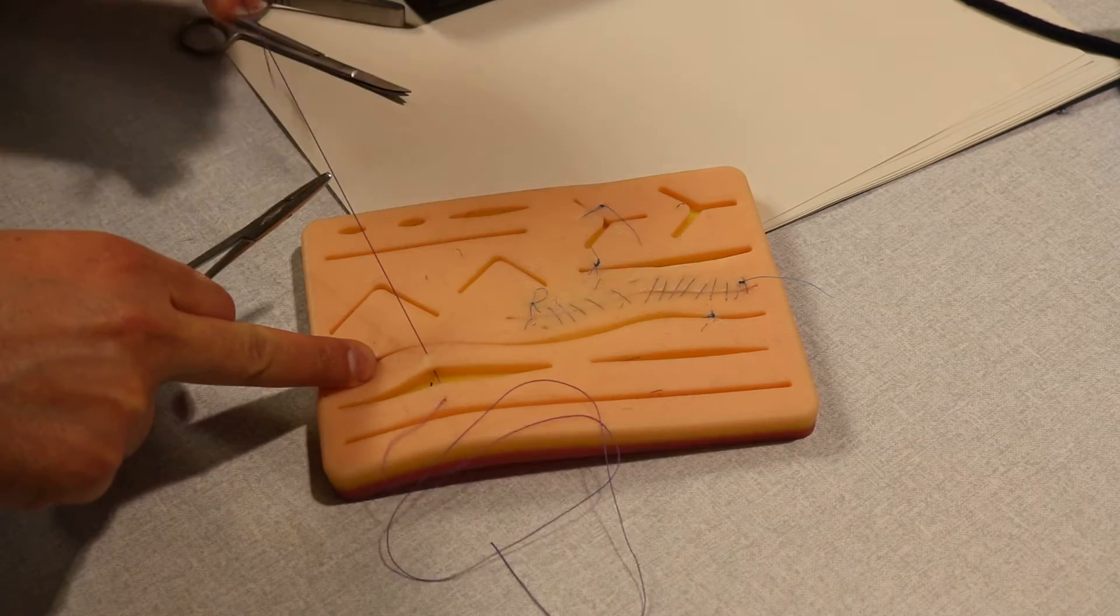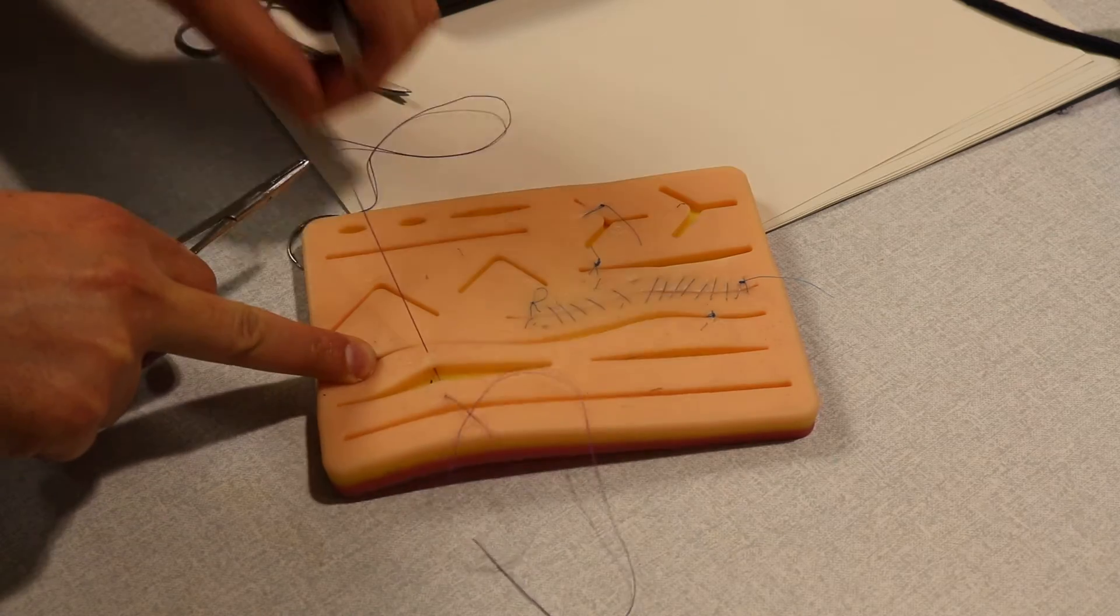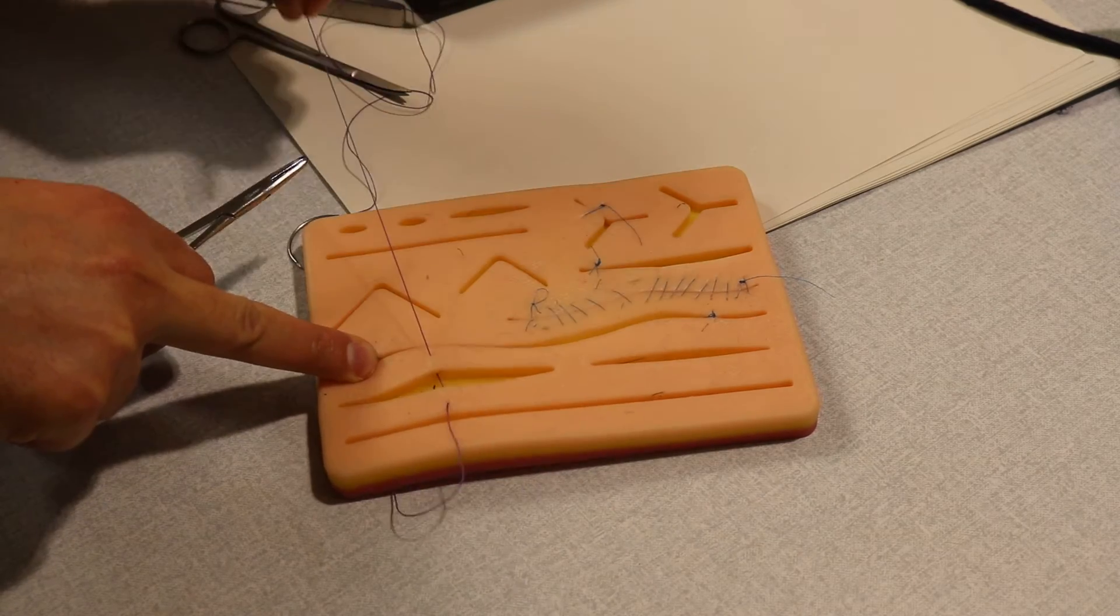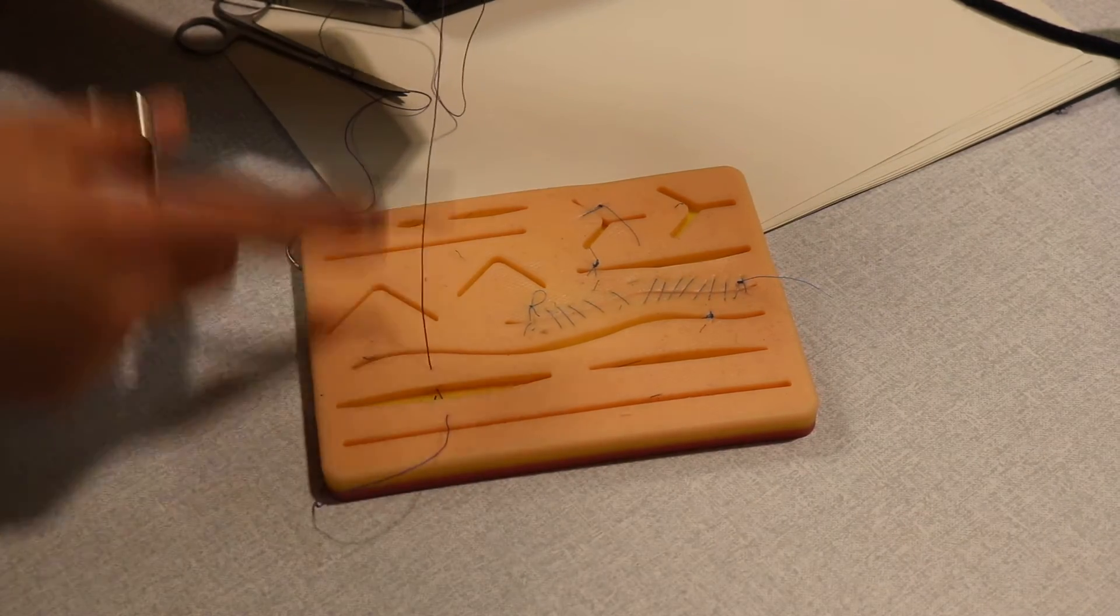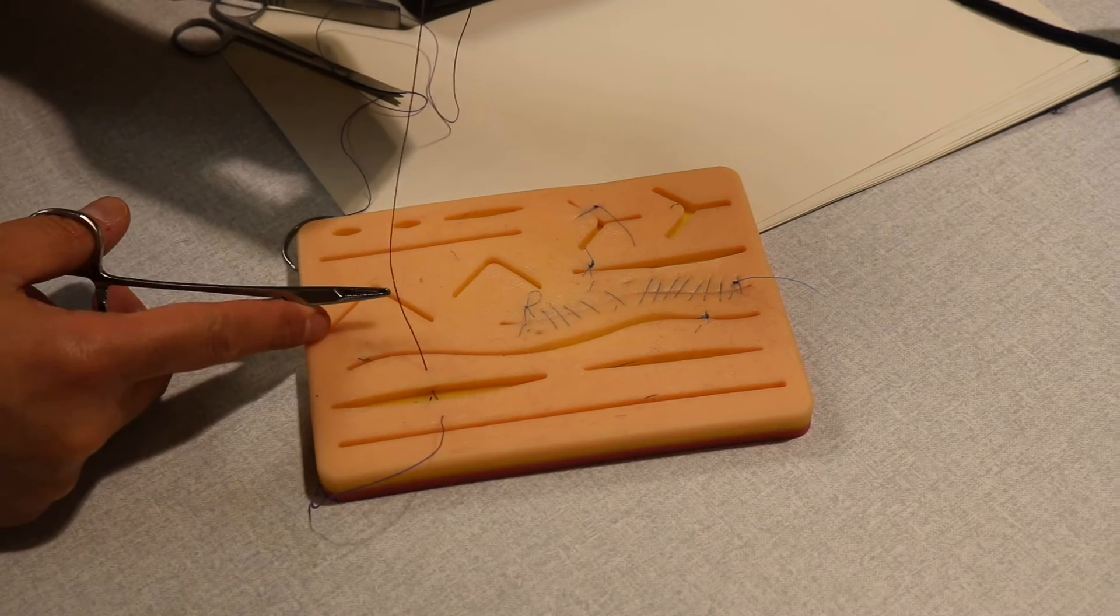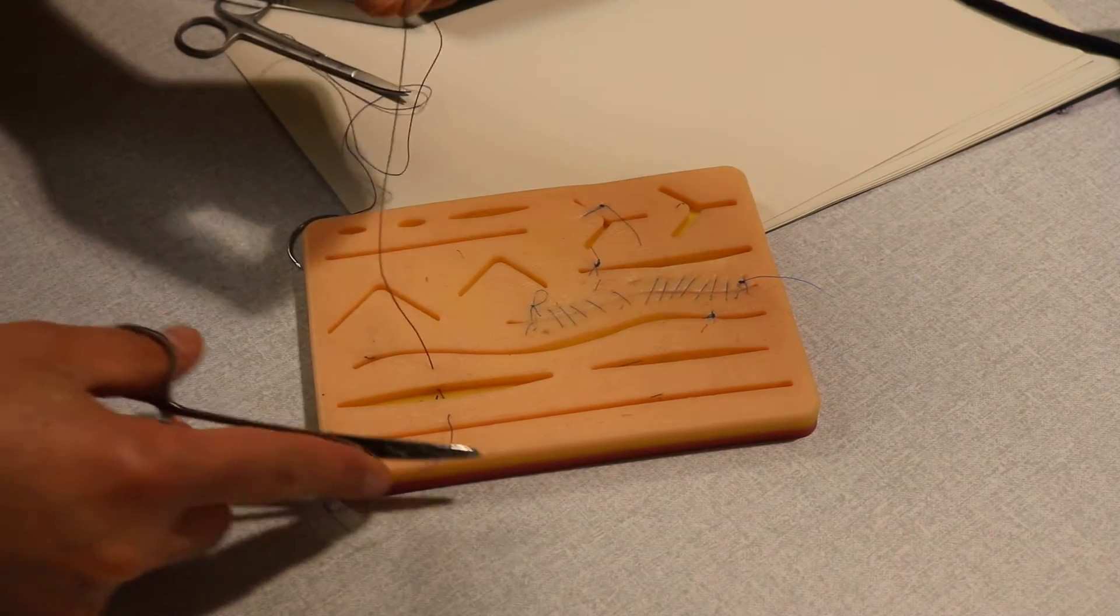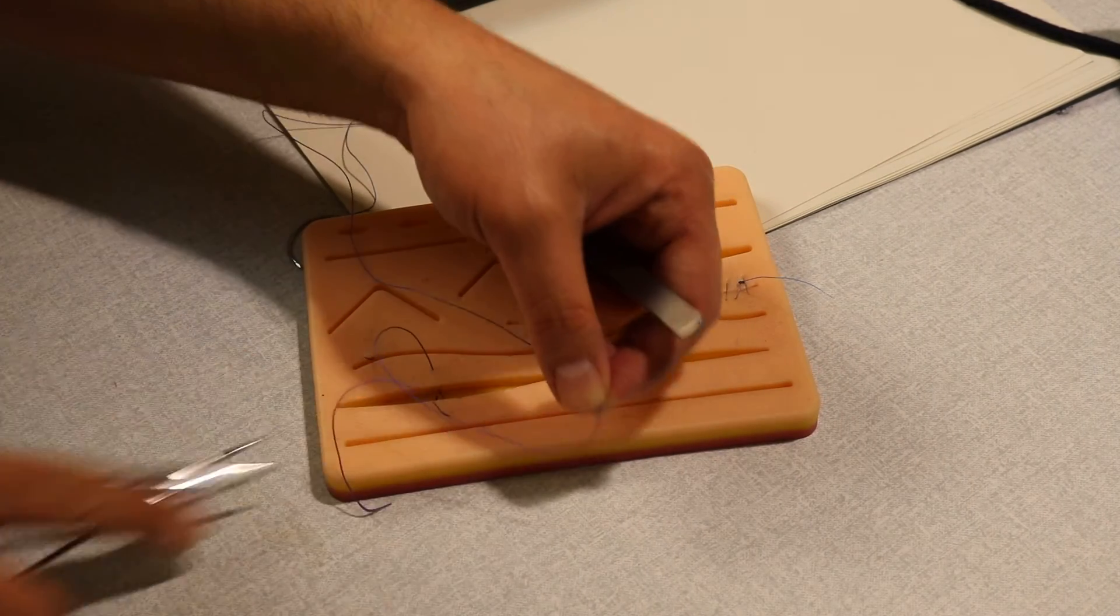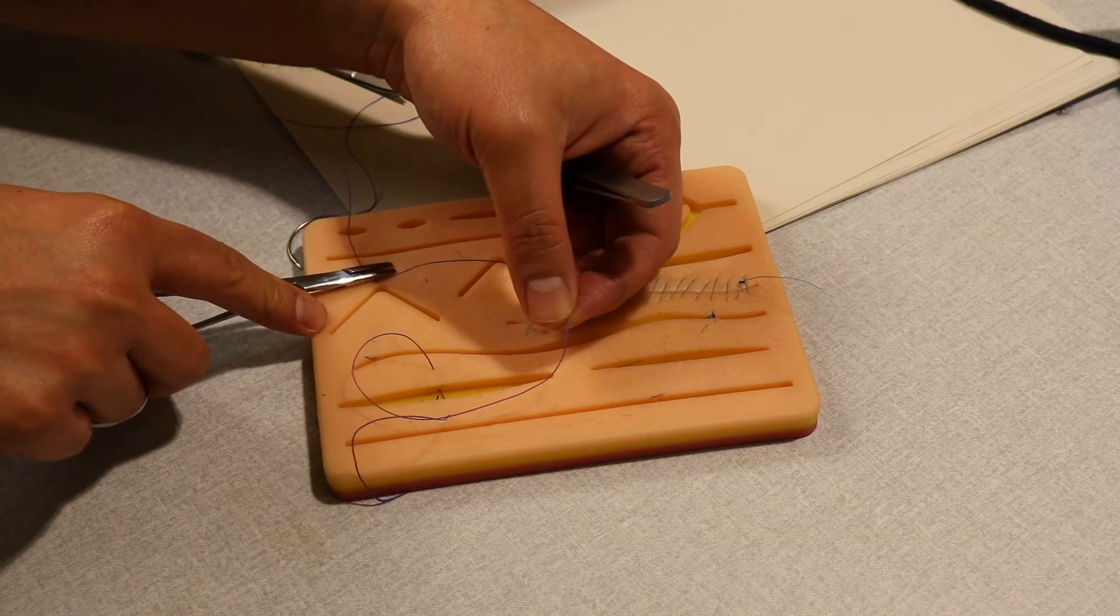So I need to pull that and create what we call a short limb and long limb attached to the needle. If I tie these together and cut, I can use that again.